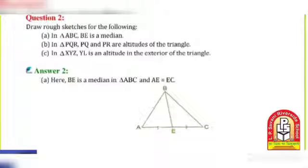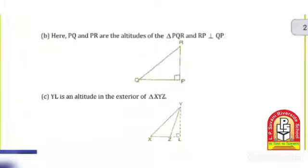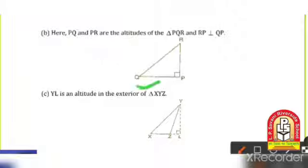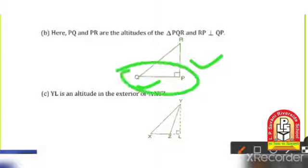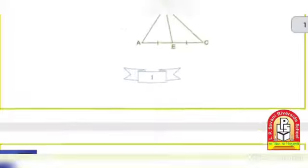Then after, second: In triangle PQR, PQ and PR are the altitudes of the triangle. Here PQ and PR are both perpendicular to each other, so we can say that these two are the altitudes of triangle PQR.